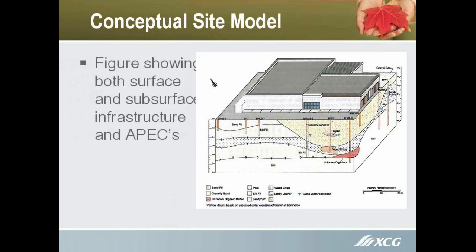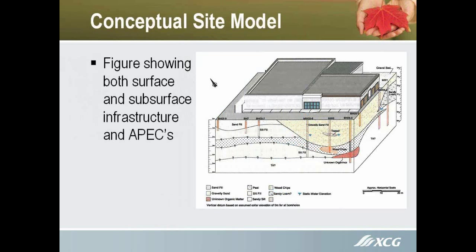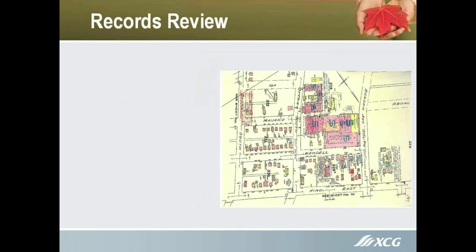Conceptual site model — this is new to the Phase 1 world. Essentially, it's a figure showing the subsurface and surface infrastructure and any areas of potential environmental concern. You can see there are a couple of contaminant plumes, the underlying soil geology, and roughly where the water table is assumed to be. In Phase 1 you don't always know that. This particular one shows wells, as it was a site that had some previous Phase 2 work done. With a Phase 2 ESA, that conceptual site model would be expanded to show wells, areas where contamination was found, and approximate aerial and vertical extents.